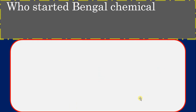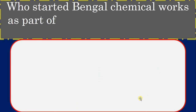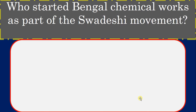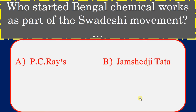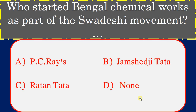Who started Bengal Chemical Works as part of the Swadeshi movement? Options: P.C. Ray, Jamshedji Tata, Ratan Tata, None. Correct answer: P.C. Ray.